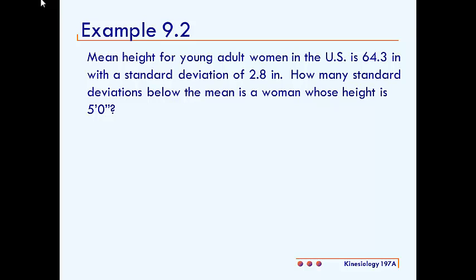In this video, we'll be working example 9.2. This one reads: The mean height for young adult women in the U.S. is 64.3 inches with a standard deviation of 2.8 inches. How many standard deviations below the mean is a woman whose height is 5 feet even?